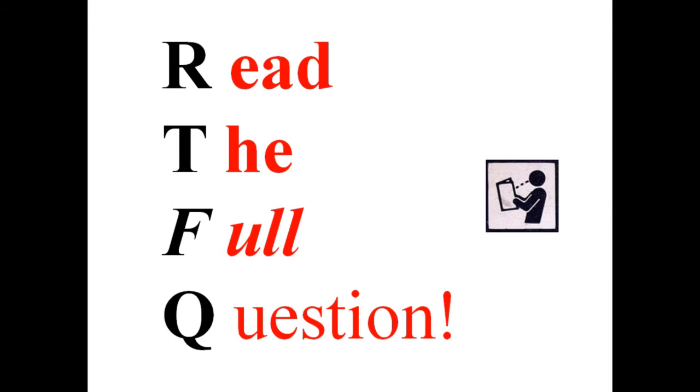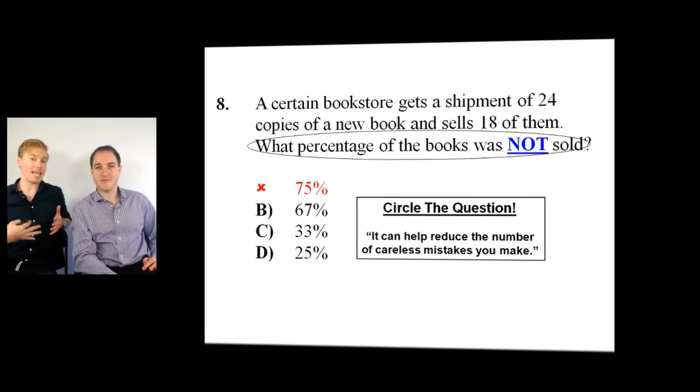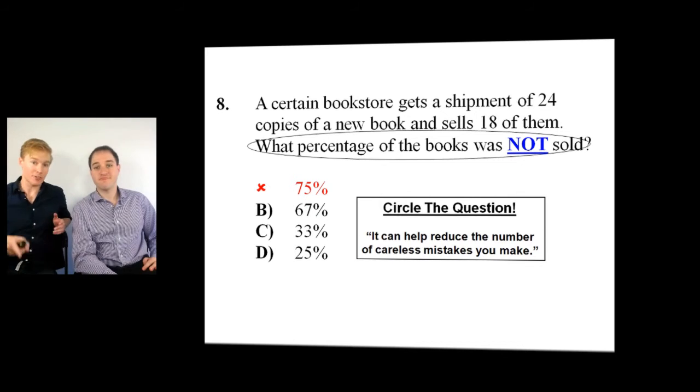RTFQ stands for Read the full question. As you can see here, there's a little picture of a guy looking at a book. You have to look or shoot lasers into the book, I'm not sure what he's doing. Yeah, what are all the details, circle, underline, all those details, because what do we see when we circle the question? What percentage of the books was not sold? Not sold, uh oh, when you see that not, and sometimes it's even in caps for you to begin with, it doesn't matter, circle it, circle it twice, circle it three times.